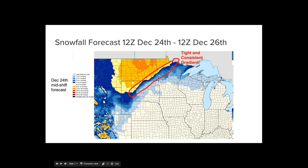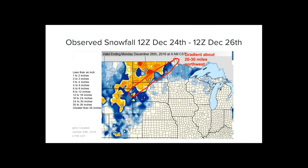The snowfall forecast from the Christmas storm — I want to go into this because I was really impressed. I had one of my coworkers here at La Crosse take an image from the big. We had this really tight gradient in the snowfall encompassing numerous forecast offices, and it's consistent all the way across — just really, really impressive. If you go to the actual observed snowfall, the gradient was only about 20 to 30 miles to the northwest. The actual absolute values underneath the heaviest snow were about the same as forecast — it was just shifted a little bit.